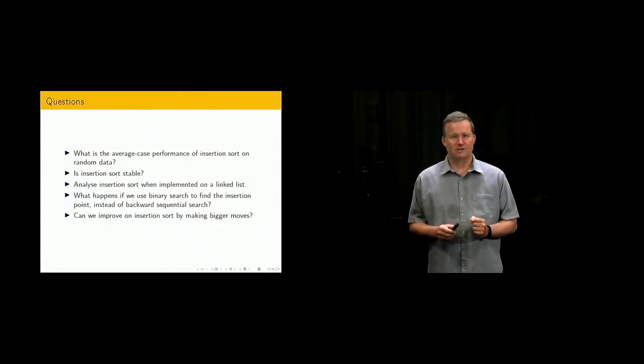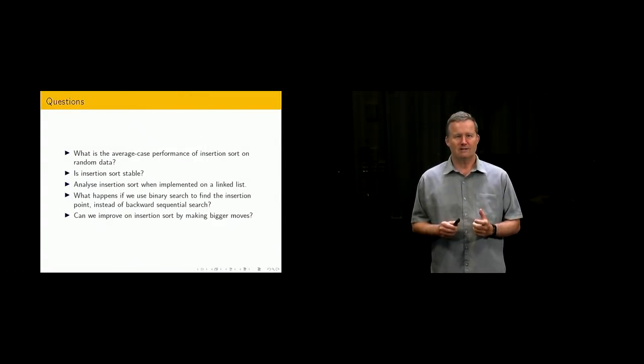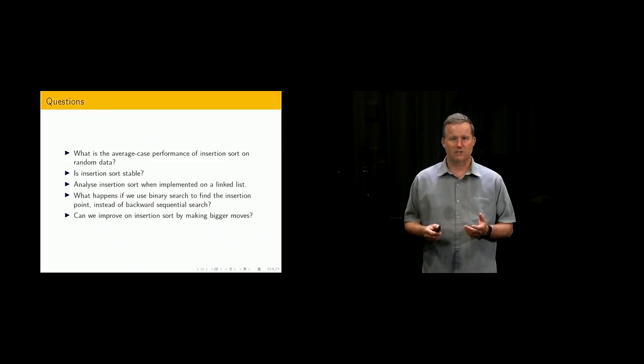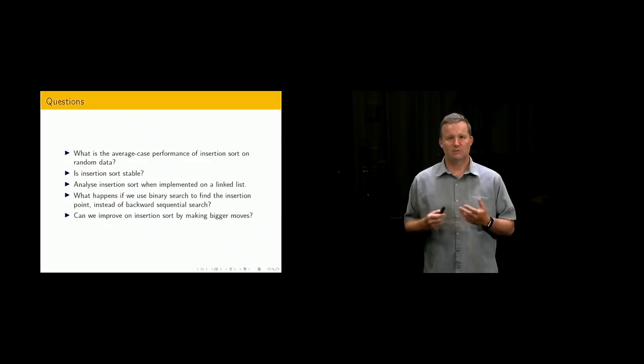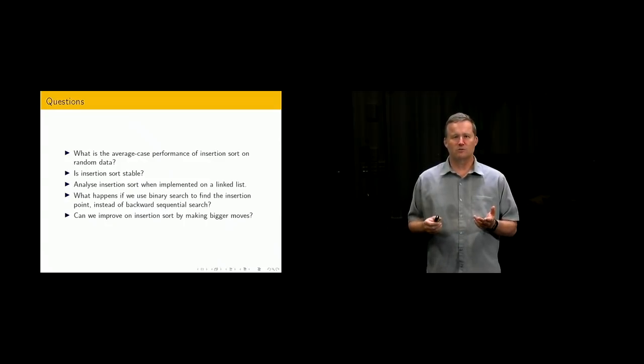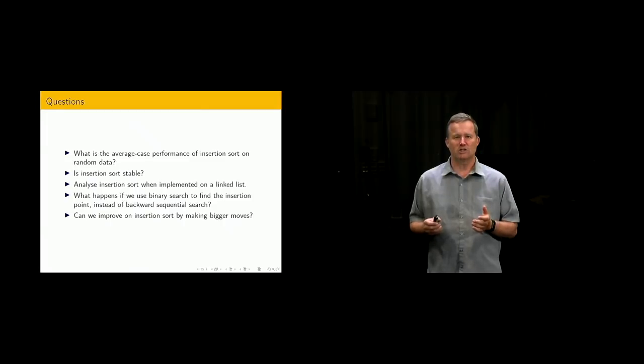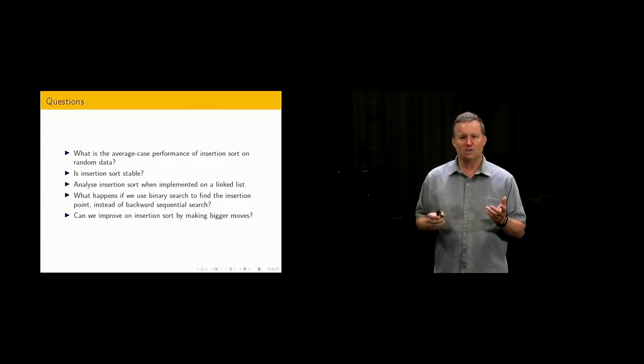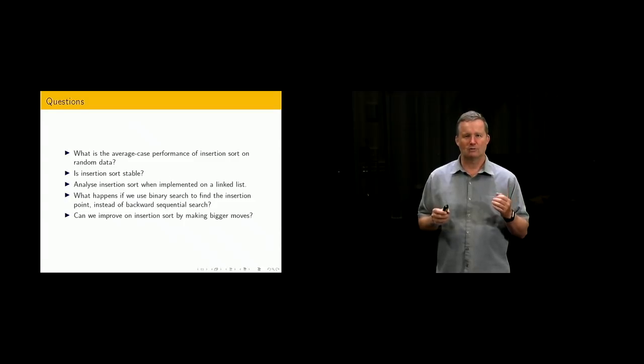Here we are again with the questions at the end of the lecture. We've seen the best and worst case of insertion sort, but what happens on average? That's a very obvious question to think about. In terms of basic properties, we know that insertion sort is in place, but is it stable? As we did for selection sort, think about the difference between an array and linked list implementation of insertion sort, and whether there are any important differences in performance. What happens if we use binary search to find the correct insertion point instead of just scanning back sequentially as we've been doing in the implementation of insertion sort? Why don't we do that? Final question.